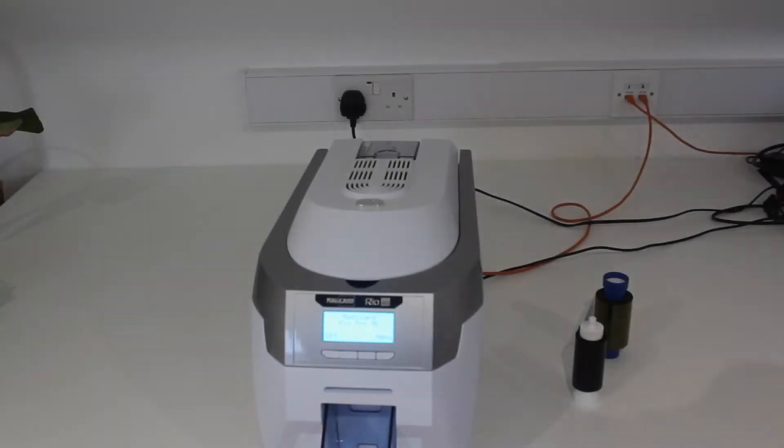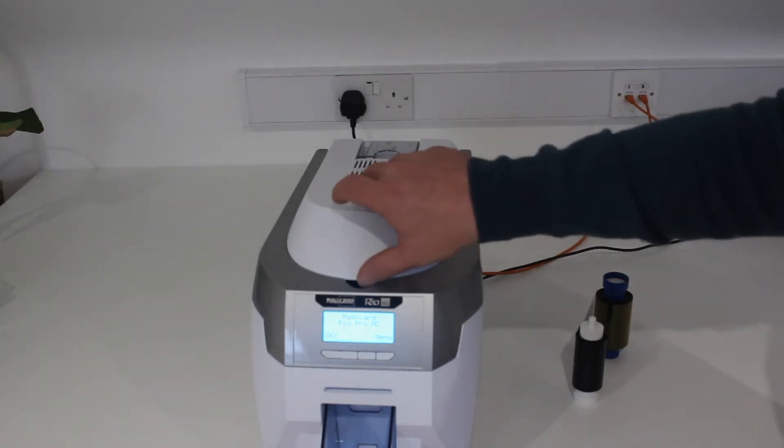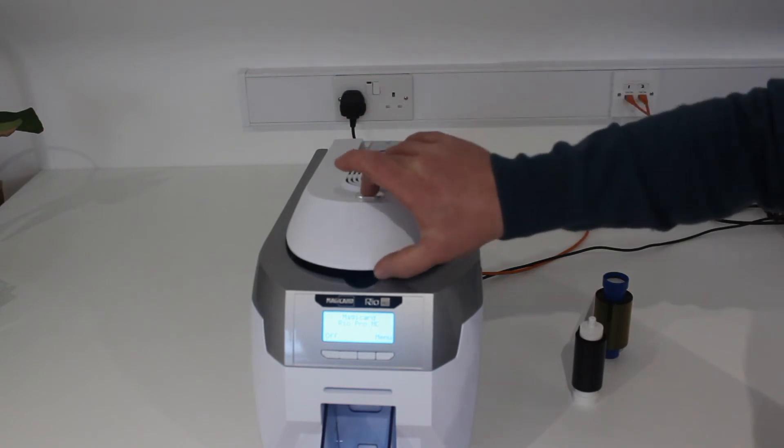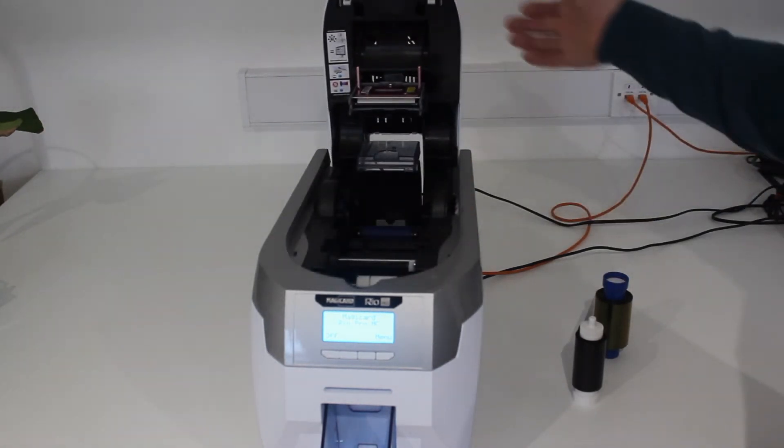Today we're going to show you how to change a ribbon. It's a very simple process. You've got a silver button here - push that down and it will open up the printer lid.